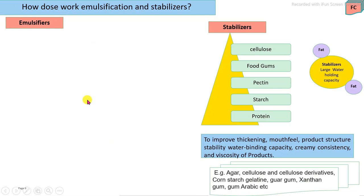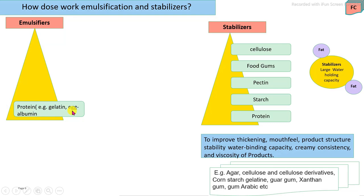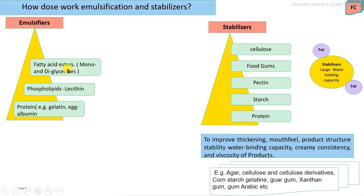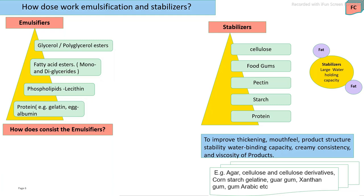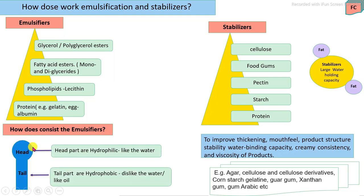Emulsifying agents added during food product preparation include protein-based agents such as gelatin and egg albumin. Then phospholipids such as lecithin found in milk, and fatty acid esters such as mono- and diglycerides, glycerols, and polyglycerol esters. A specific emulsifying agent consists of two main parts: the head and the tail. The head is hydrophilic in nature, meaning it binds with water, and the tail is hydrophobic in nature, meaning it dislikes connecting with water and instead connects with oil.